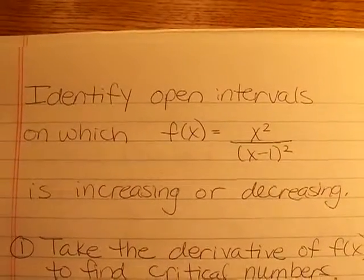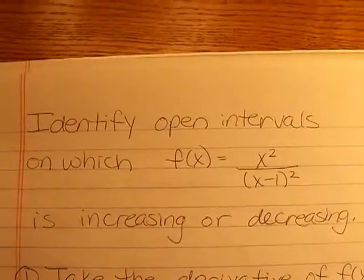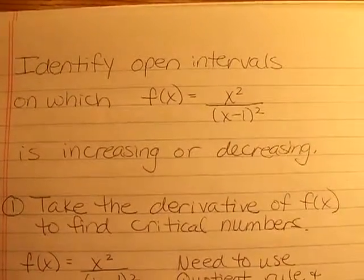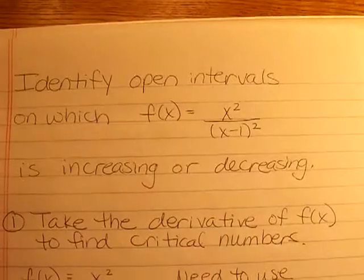We need to identify the open intervals on which this function is increasing or decreasing. So the first step we need to take is to find the derivative of the function to get the critical numbers.